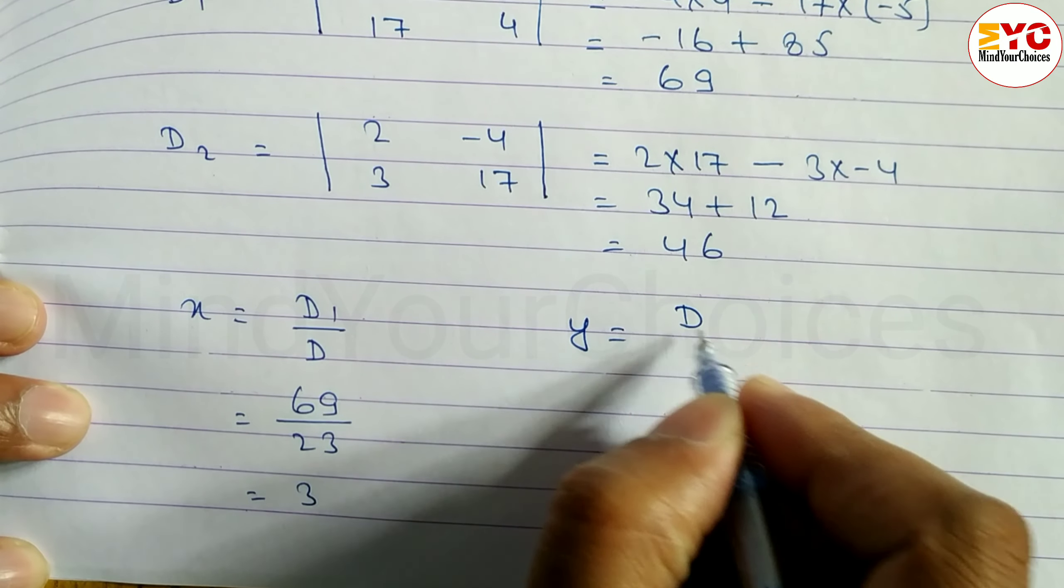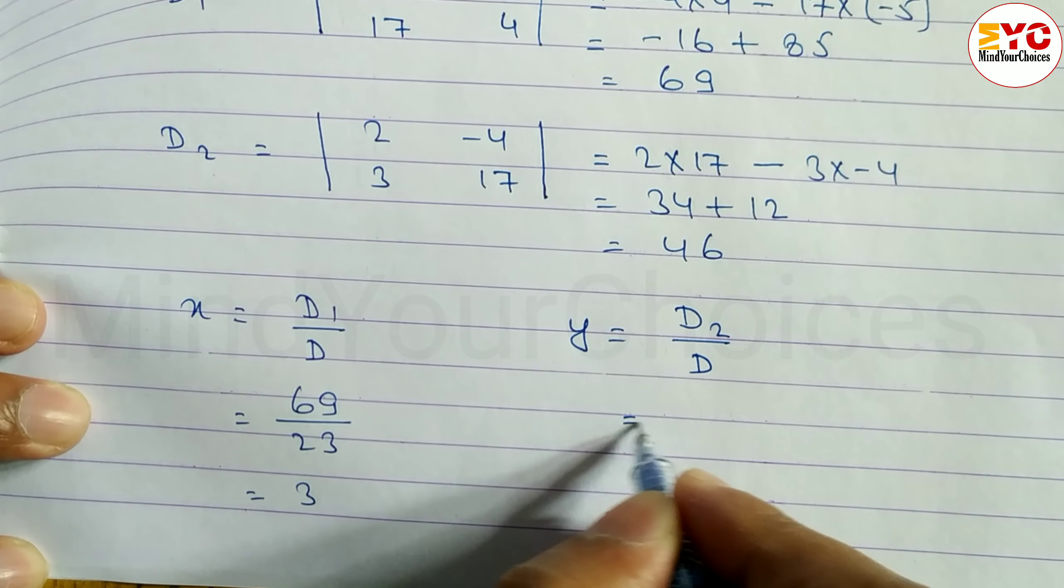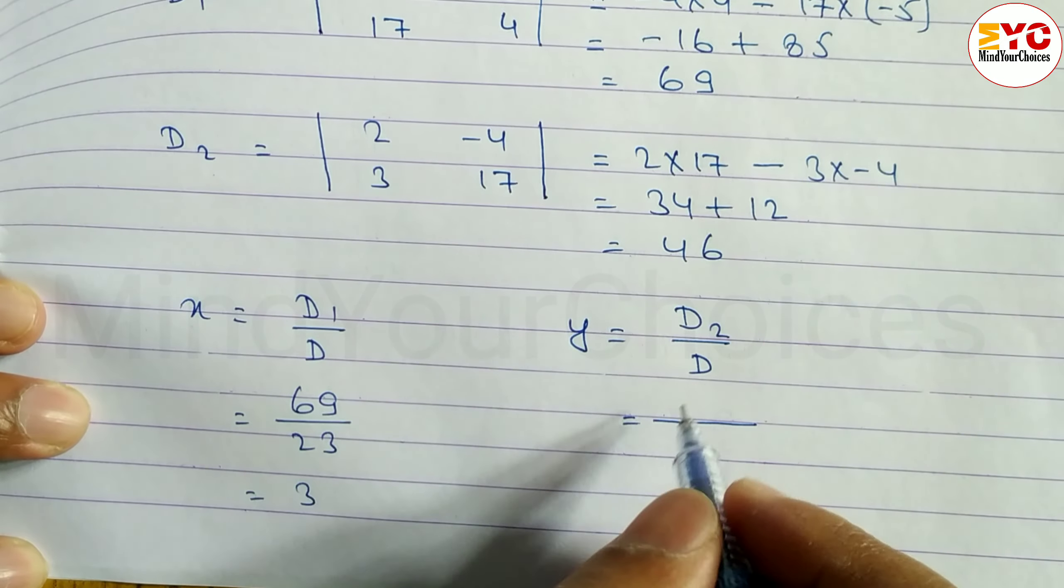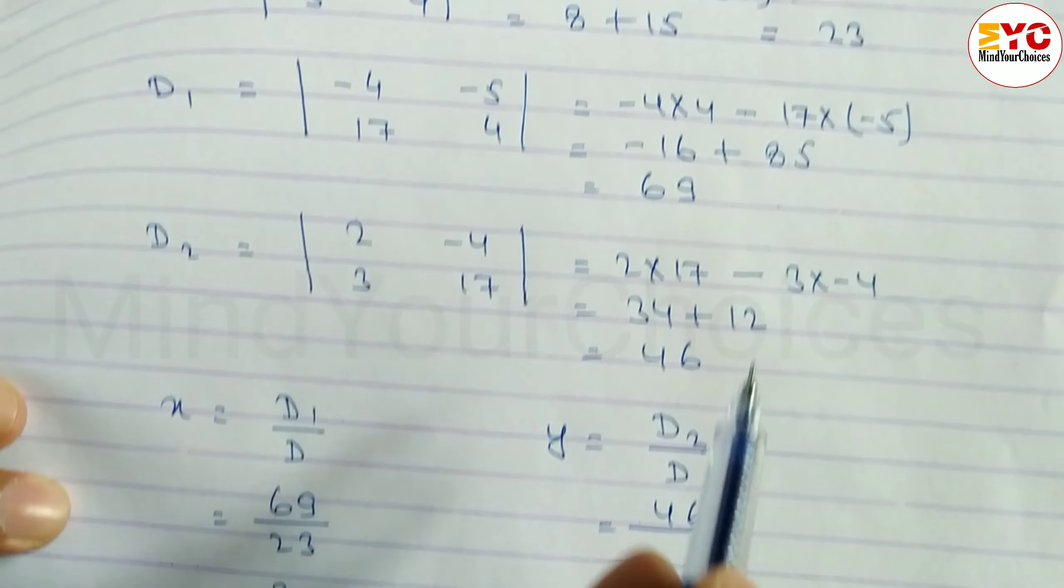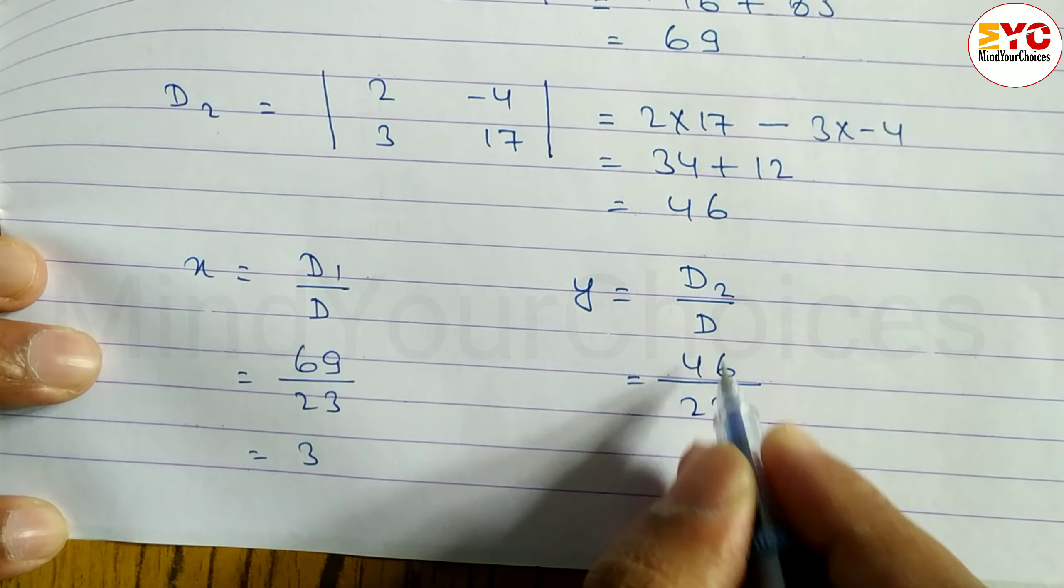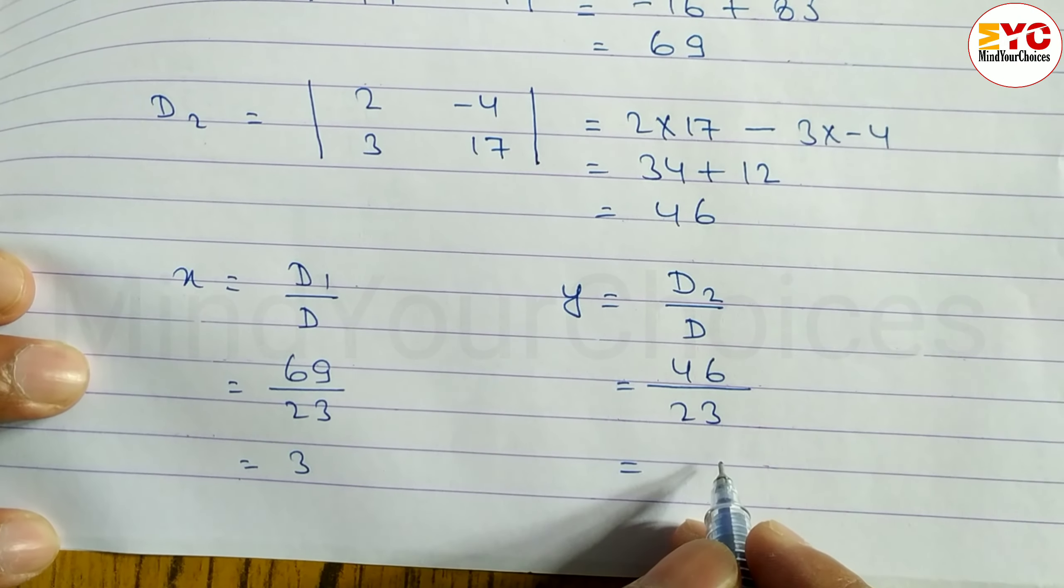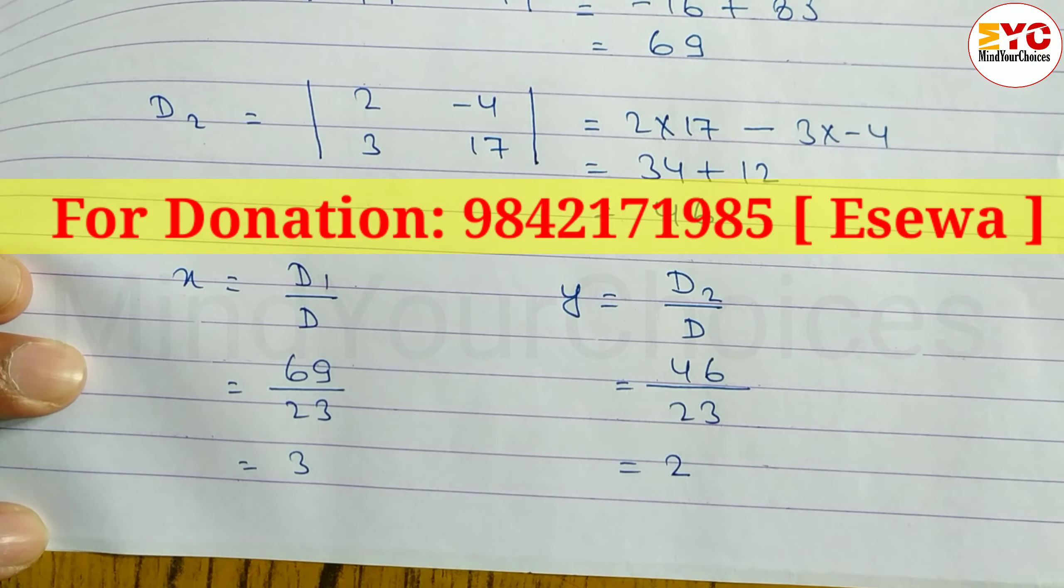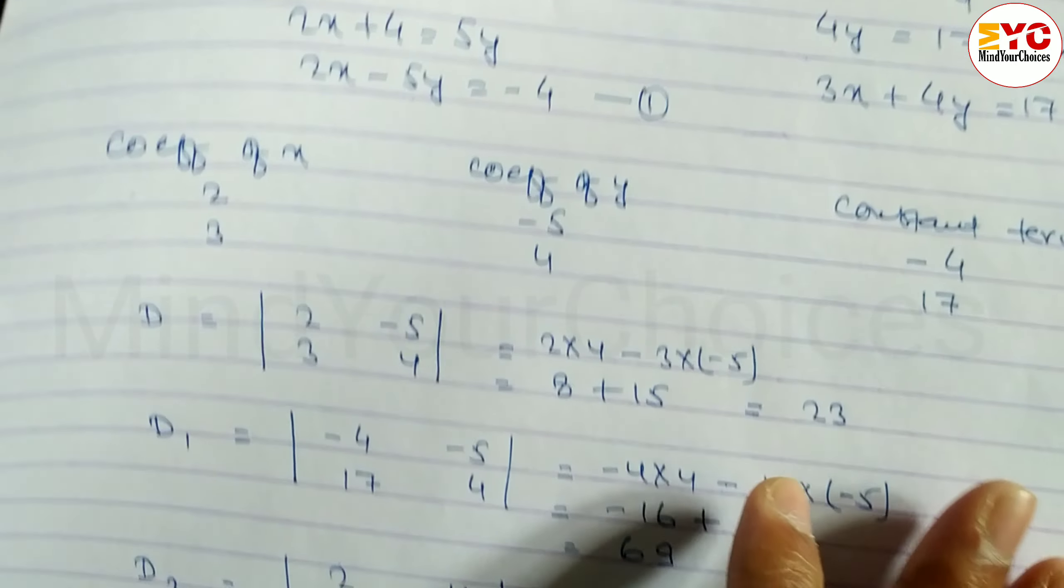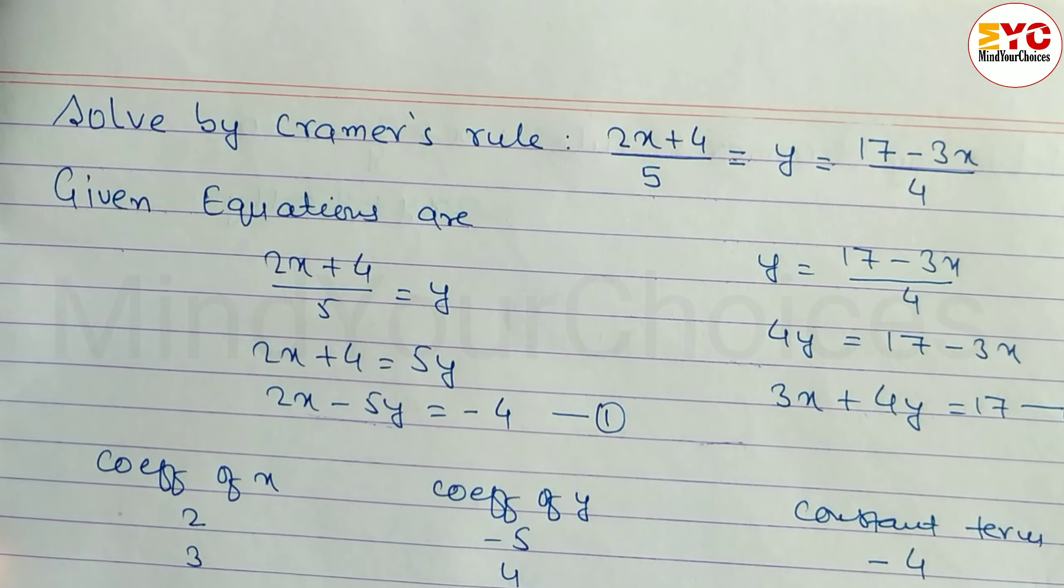Similarly we have to find out the value of y. The formula is D2 by D. Value of D2 is 46 divided by D, which is 23. Divide and we get 2. So value of x is equal to 3 and value of y is equal to 2. Hope you understand this question, how to solve by using Cramer's rule.